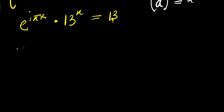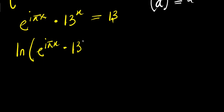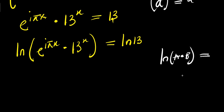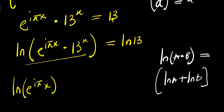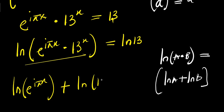Now we can apply natural log. Taking the natural log of e to the power of i times pi x, times 13 to the power x, equals natural log of 13. Also, if you have natural log of a times b, this equals natural log a plus natural log b. So applying that here, we have natural log of e to the power of i times pi x, plus natural log of 13 to the power x, equals natural log of 13.